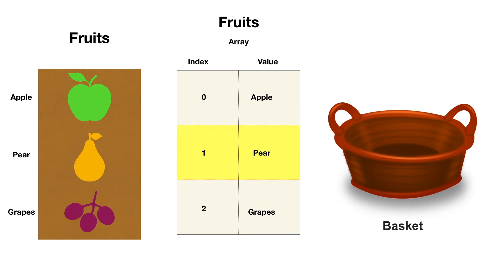For example, if you choose the pear here, you will see the value 1 at my index. That's how I am adding all the other values — that's how I am adding grapes to the same. So if I add 1, my index value is 2.